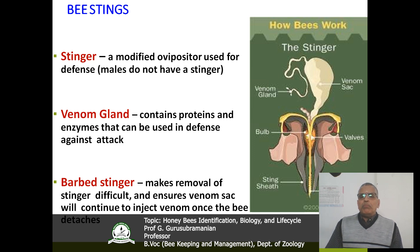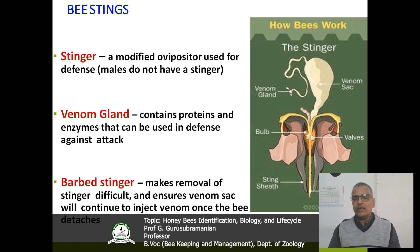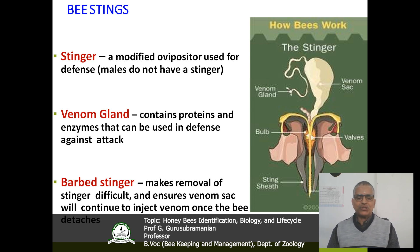The bee sting has three different parts: one is the stinger, number two is the venom gland, and the third is the barbed stinger.